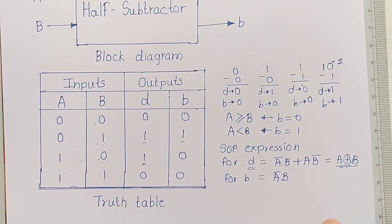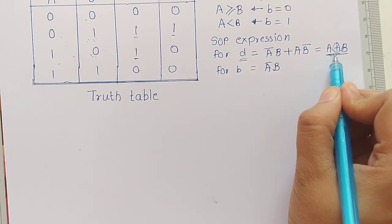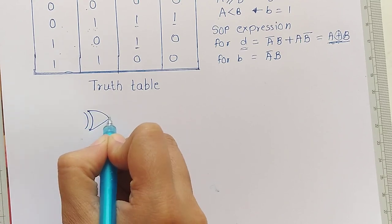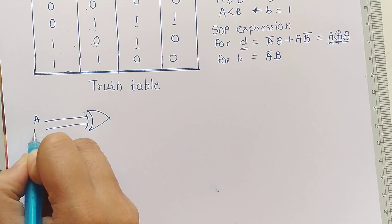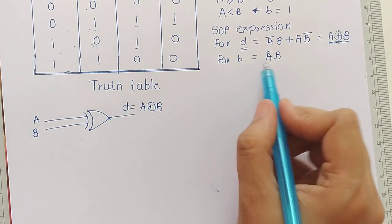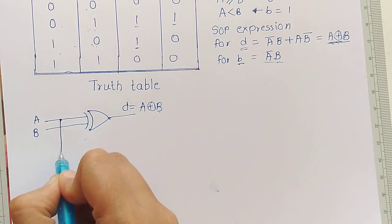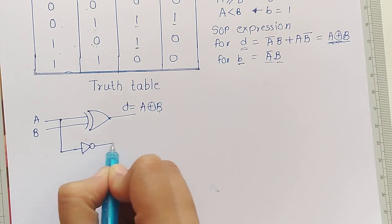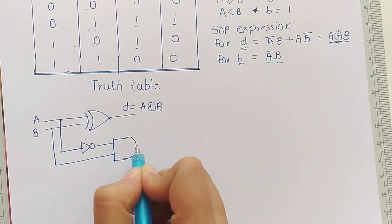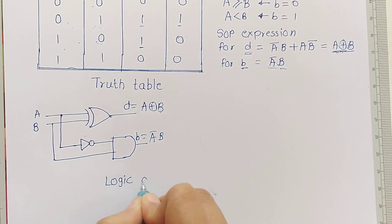Now we draw the logic diagram for the half subtractor using an XOR gate. For the expression A XOR B, we use one XOR gate with inputs A and B, and the output is A XOR B, which is the difference D. For the borrow output B = A̅B, we take the complement of A using a NOT gate, then feed A̅ and B into an AND gate to get A̅B, which is the borrow. This is the logic diagram of the half subtractor.